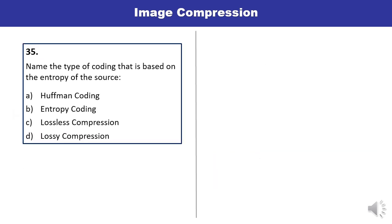Question 35: Name the type of coding that is based on entropy of the source. B is the correct answer.